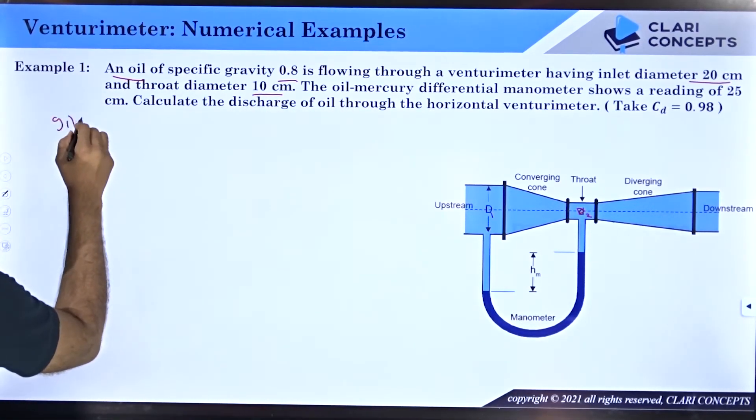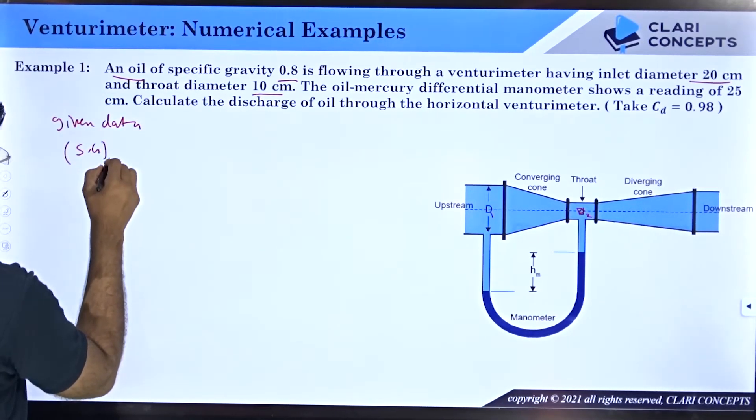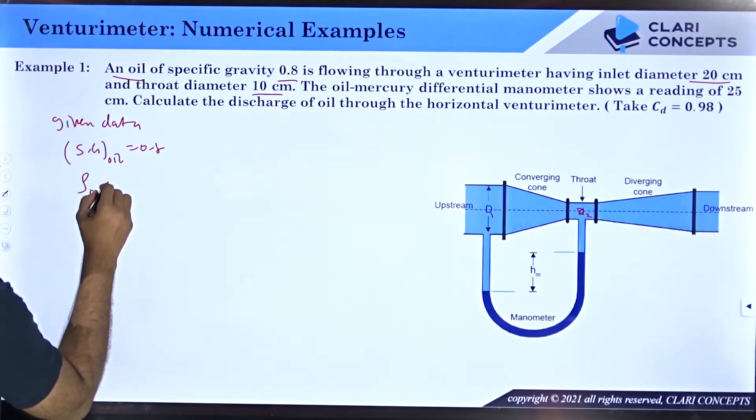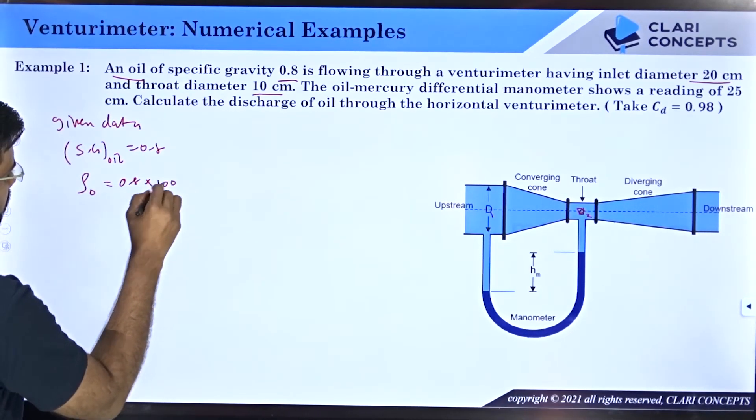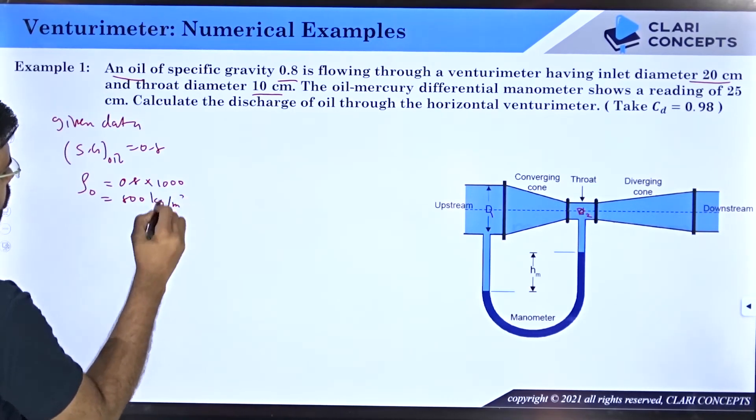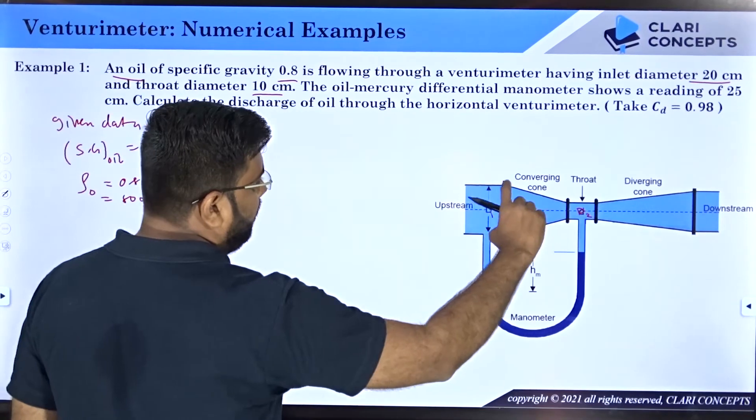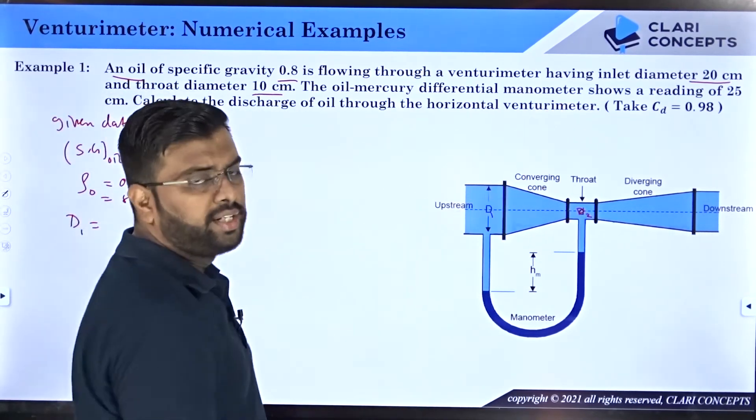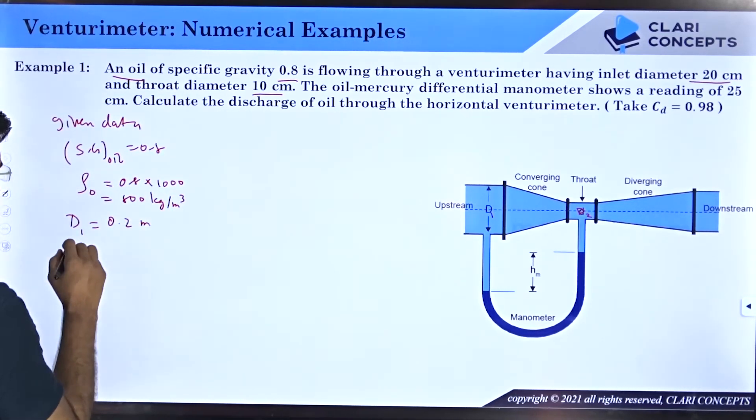Given data: specific gravity of oil is 0.8, that means density of oil will be 0.8 into 1000, which equals 800 kg per meter cube. The venturimeter has inlet diameter d1 of 20 centimeters, converting to meters gives 0.2 meters. And d2 is 10 centimeters which is 0.1 meters. We always use values in meters because of pressure units.